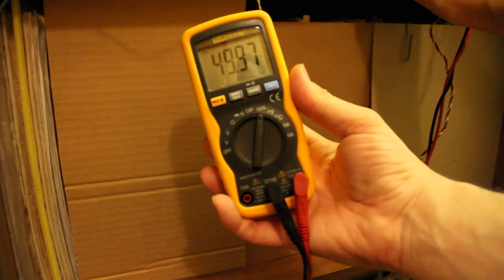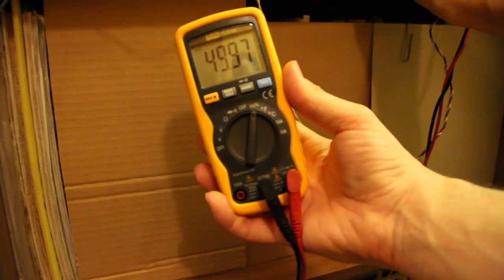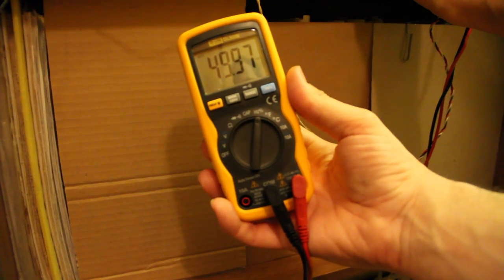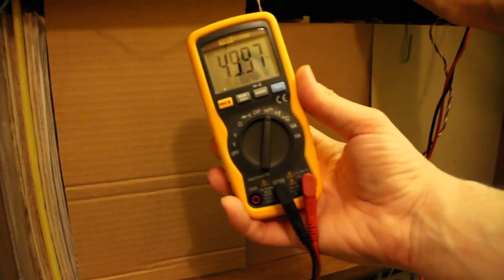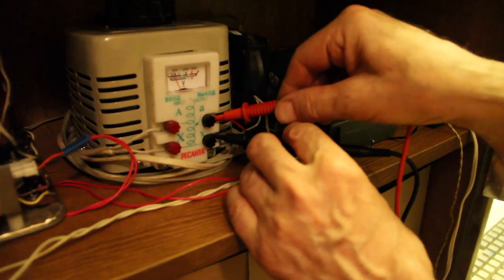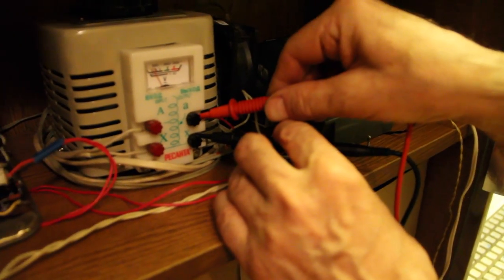Just measuring the frequency of the output from the Variac. It's 49.97 cycles per second, and there's Alexander on the output of the Variac.